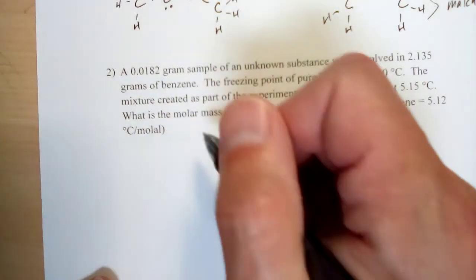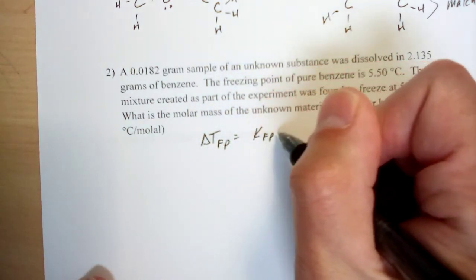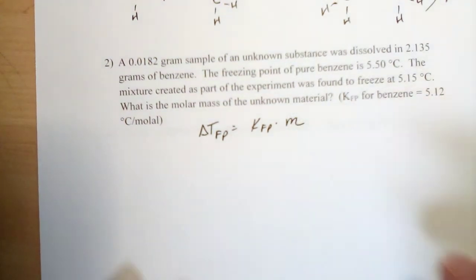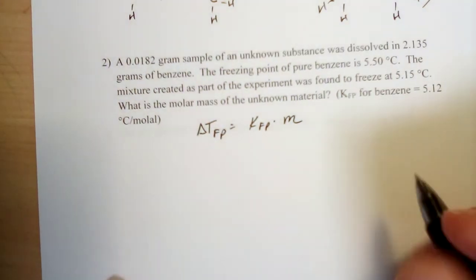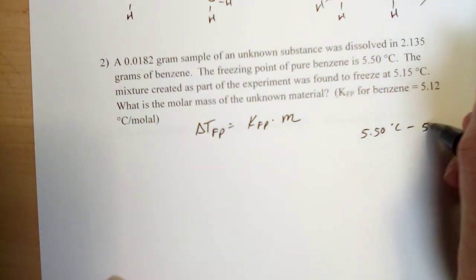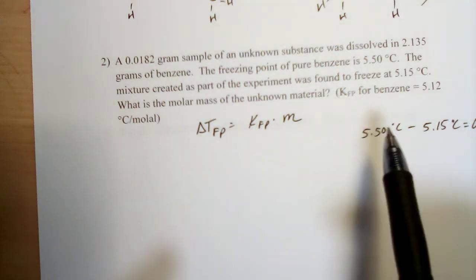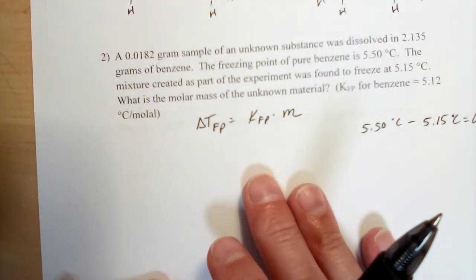You may remember the change in temperature of the freezing point is equal to the constant for freezing point depression times the molality of the solution. So freezing point depression and boiling point elevation use molality. We've already got the constant here. We can solve for how much the temperature changed just by subtracting. So if we take that initial temperature, subtract out the lowered temperature, we get 0.35 degrees C. That is our temperature change. Now one thing to watch out for in this case—it's positive, the constant is positive. So we want to think of the temperature change as positive.